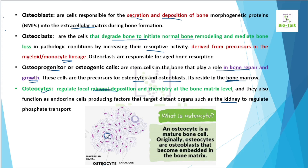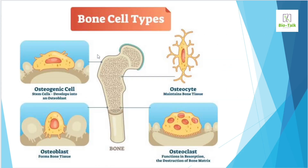Osteocytes respond to mechanical stress, eating or loading stress, and derive signals to osteoblasts. Osteocytes are mature bone cells — originally osteoblasts that become embedded in the compact bone matrix. To summarize the bone cell types: osteogenic cells, also known as osteoprogenitor stem cells, develop into osteoblasts. After that, the osteocyte maintains the bone tissue.